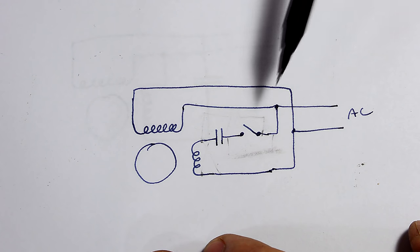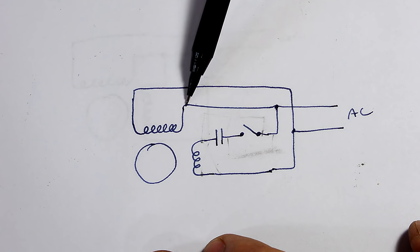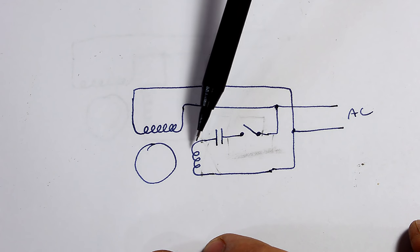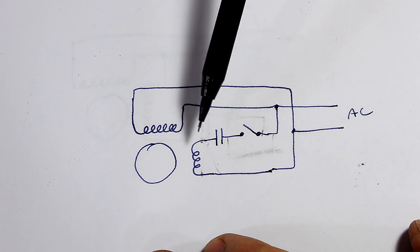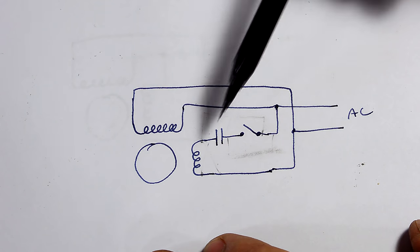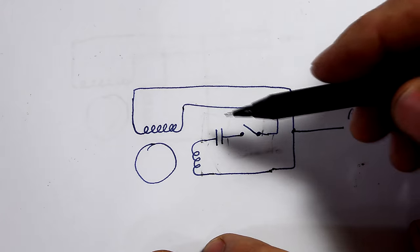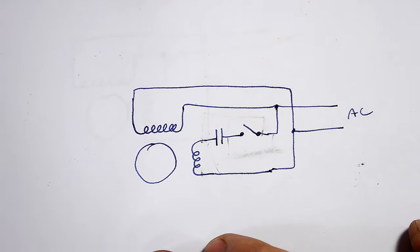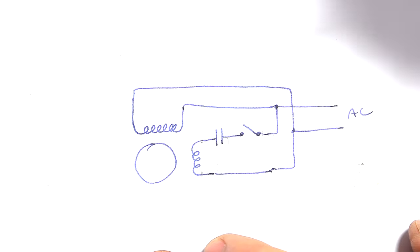So how do we reverse this motor? I can't just move the AC power connection from here to here. That would reverse the motor but that would make the starter winding the main winding and they're very different and that's not going to work very well. What we need to do instead is just to reverse one of these windings so that essentially we make a mirror image of the magnetic field and anything that was clockwise becomes counterclockwise.